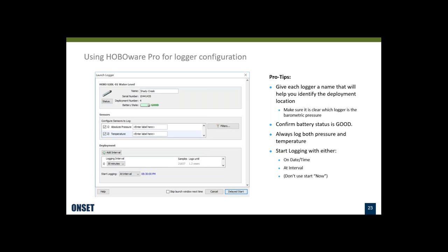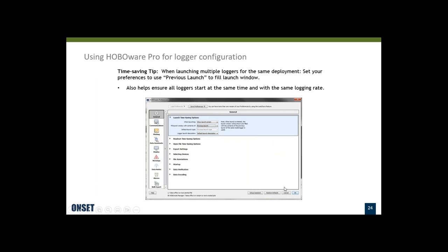We have an option for starting now, but typically you don't want to just start now because your data will be at a random time. If you're logging every five minutes, you want it to log at 10:00, 10:05, 10:10 — at nice even intervals, not starting at 10:02 and a half. It just makes it a lot easier to process and correlate the data if you use either 'at interval' or a date-time start. Once you've set your logger up, you click the key for delayed start. A time-saving tip: under HOBOware preferences, use the launch time savings option so the contents of the previous launch for that logger type fill the next launch window — this ensures all loggers start at the same time with the same logging interval.